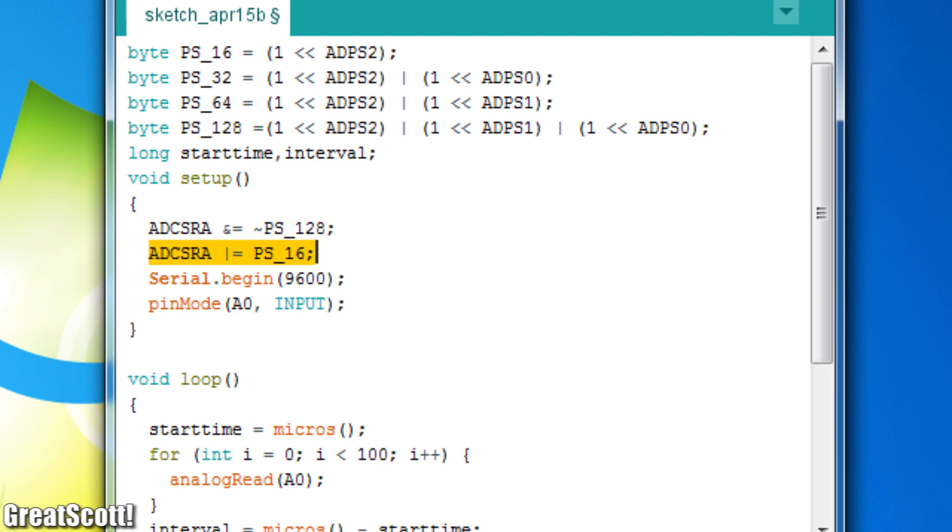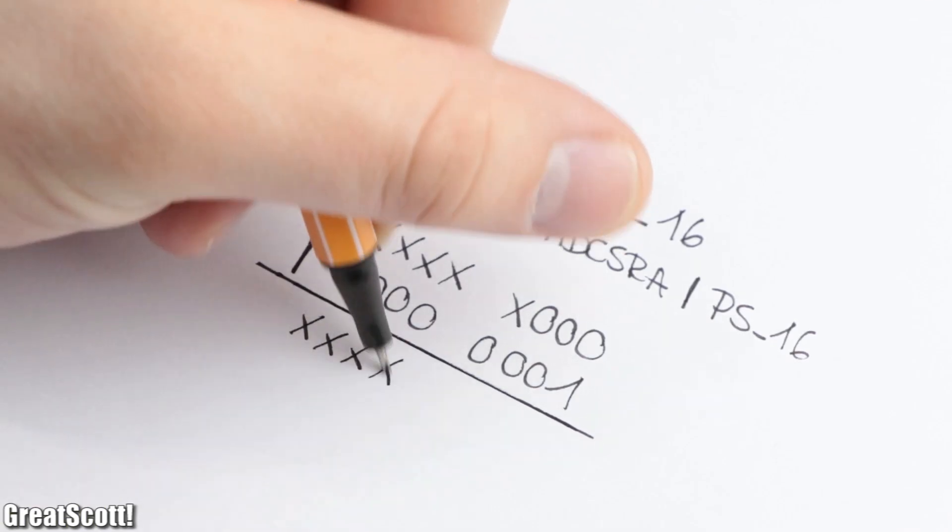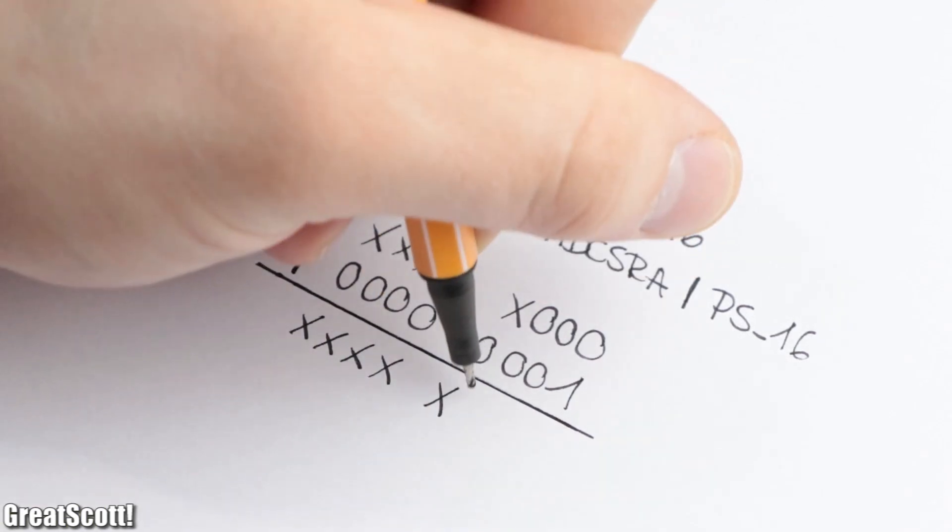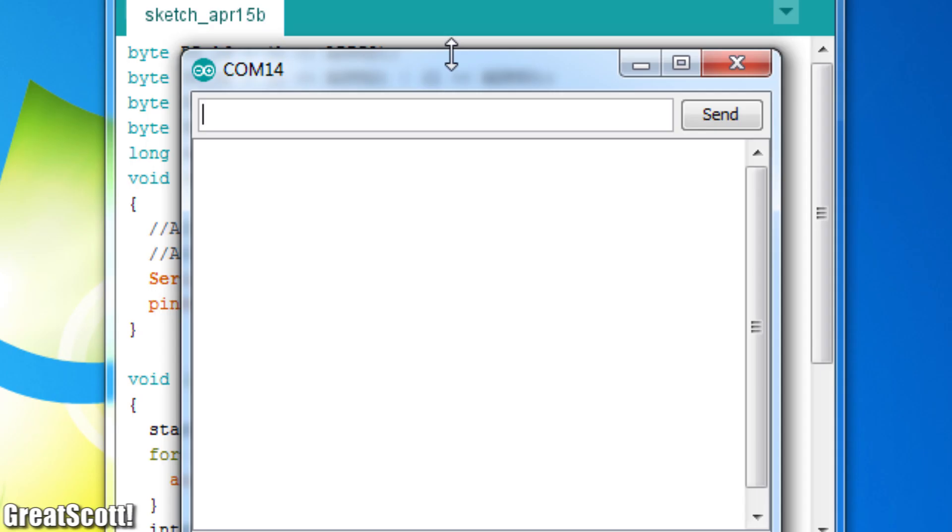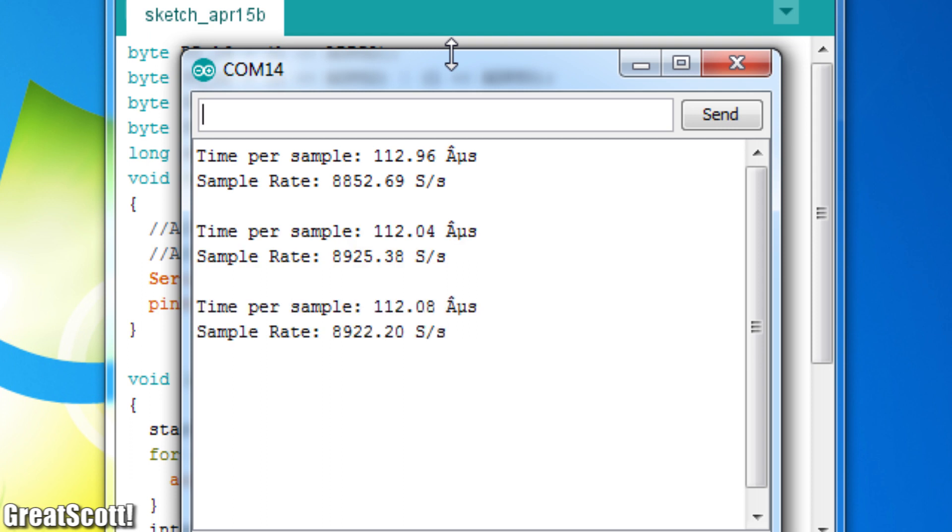And finally the last line once again leaves the non-prescaler bits alone, but writes the one of the PS16 byte to bit 0, which thus increases the sampling rate of the ADC from the original 112 microseconds to 15 microseconds.